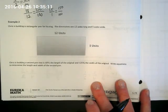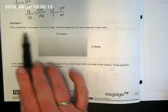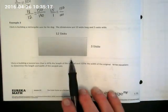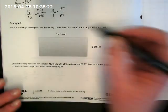What we're looking at is Chris is building a rectangular pen for his dog. The dimensions are 12 units long and five units wide. That's important information.